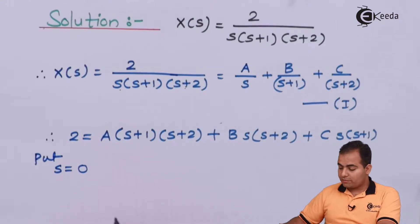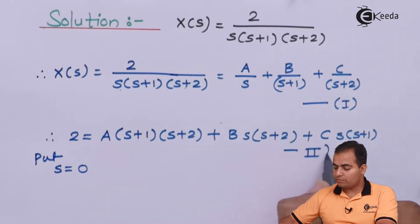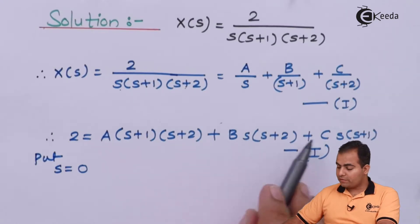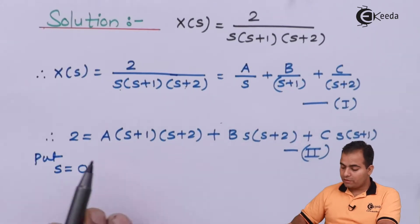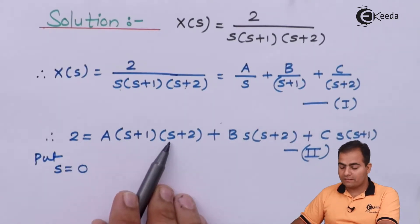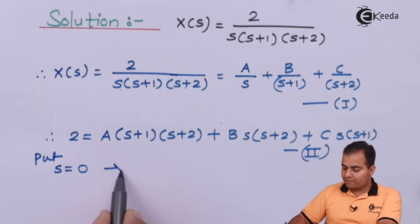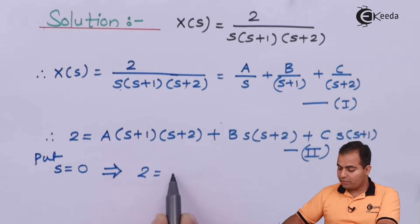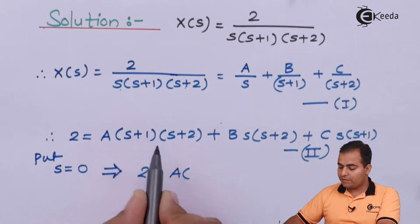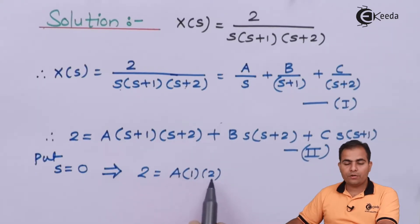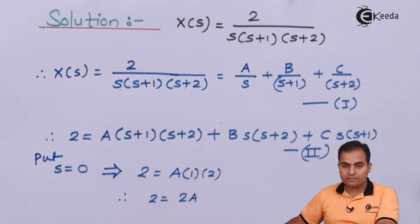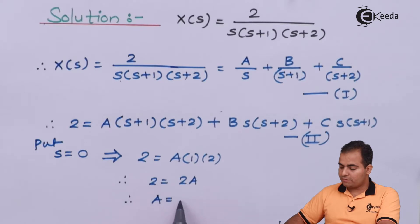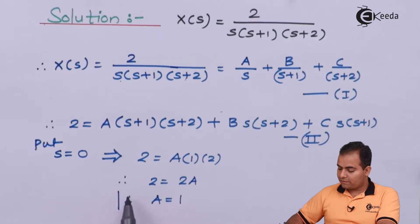Putting S equal to 0 in equation number 2: on the left hand side we have only 2. The S terms become 0, so the B and C products become 0. On the right hand side, we have only 1 and 2 in the remaining bracket — 1 into 2 is 2 — so we have 2 equals A times 2. After cancelling, A value is 1.